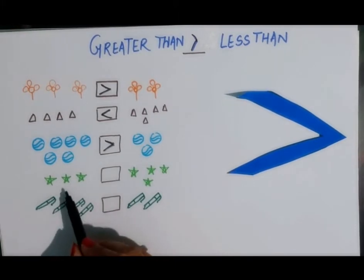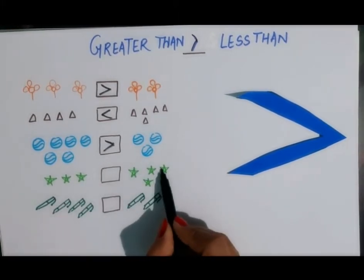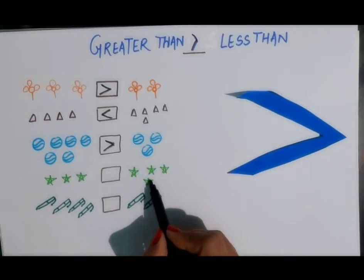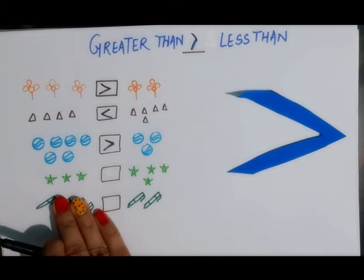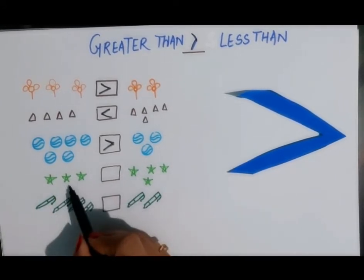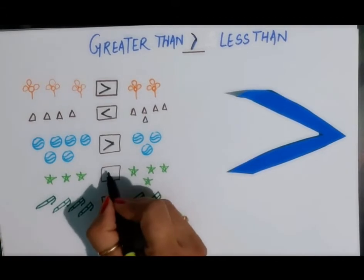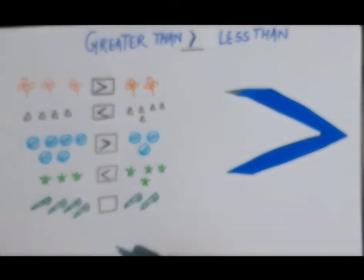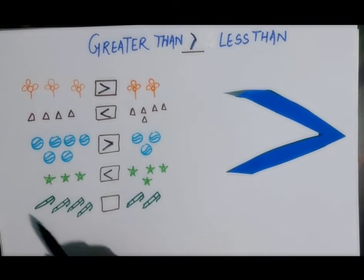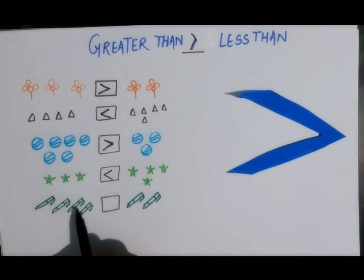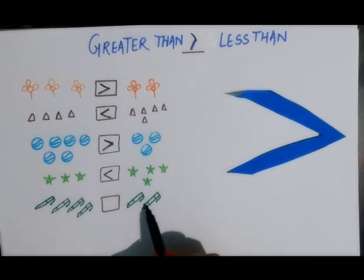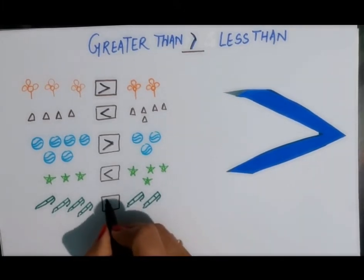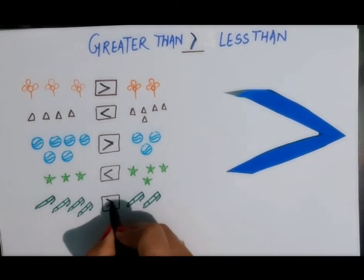Next — how many stars are there? One, two, three on this side, and one, two, three, four on the other side. There are four stars on this side and three stars on that side. Four is greater than three, so we use this sign. Next — how many pens are there? One, two, three, four on this side, and one and two on the other. Four is greater than two, and two is less than four, so we use this sign.